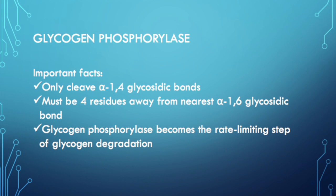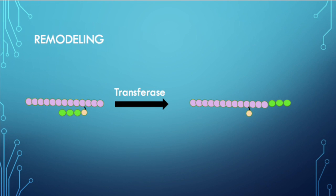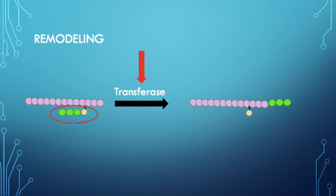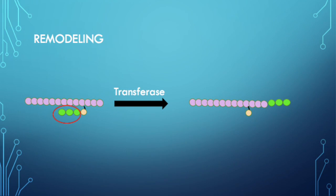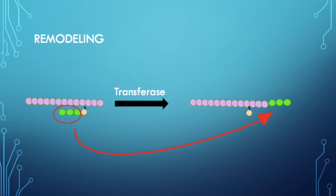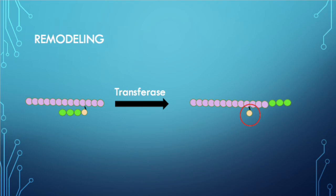This constraint makes glycogen phosphorylase the rate-limiting step of glycogen breakdown. Since it must be four residues away from the nearest alpha-1,6 bond, glycogen chain remodeling is necessary for breakdown to continue. Two enzymes are used for remodeling: transferase and alpha-1,6 glucosidase. When a branch linked by an alpha-1,6 bond is down to four residues, the transferase enzyme shifts three of the remaining glucose residues away from the alpha-1,6 bond to an end of the glycogen chain, leaving one lone glucose residue attached by an alpha-1,6 bond.